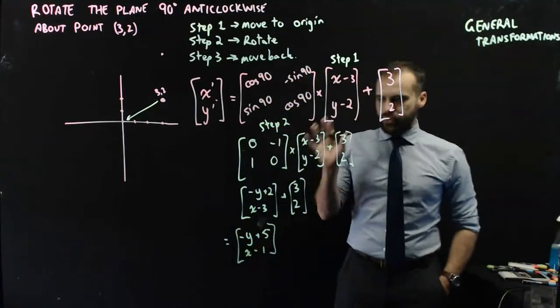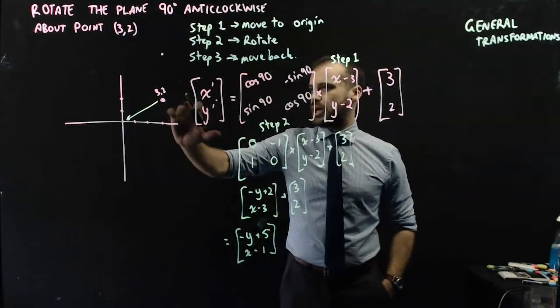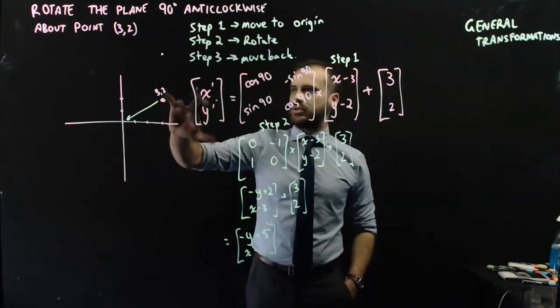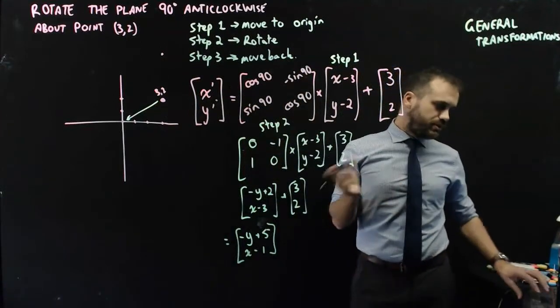All right. And that should be our transformation to rotate a point around (3, 2) 90 degrees anticlockwise. We can check that out.